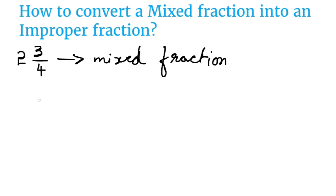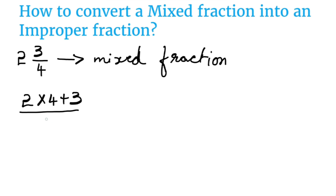To convert it into an improper fraction, which is another type of fraction, to get the numerator we first have to multiply the whole number — that is 2 — with the denominator, that is 4. Then we add the numerator, that is 3. For the denominator, we write the denominator 4 as it is.